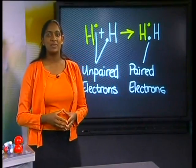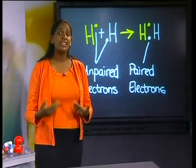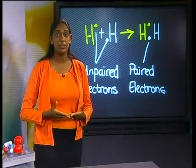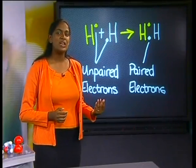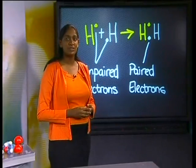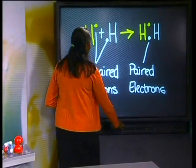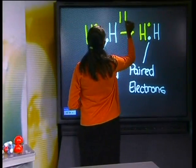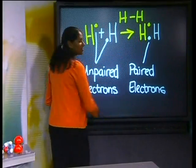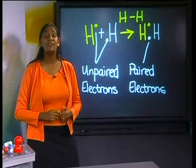Yet another scientist by the name of Cooper made it even easier. He came up with the idea of using one small stripe for each shared pair of electrons in a molecule. In this instance, we had only one shared pair between the hydrogen atoms, so only one stripe is needed. This bond is known as a single covalent bond.